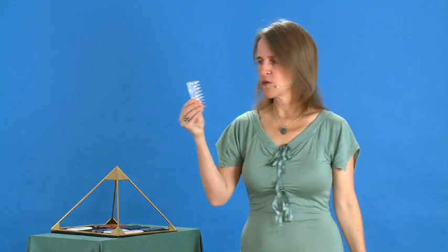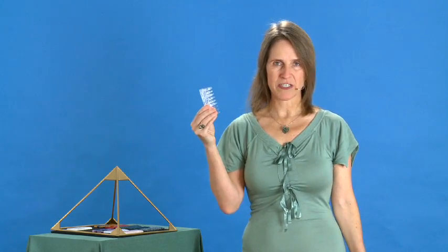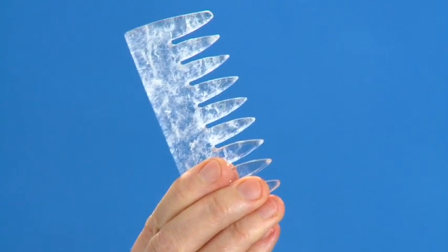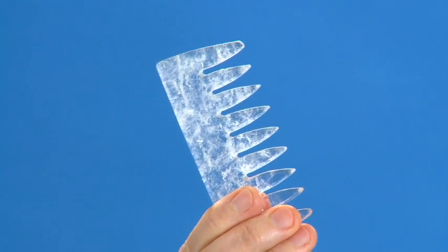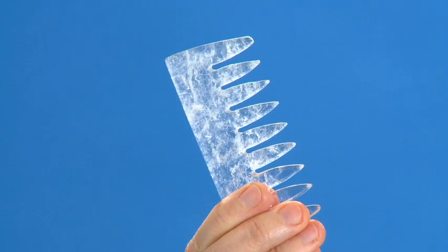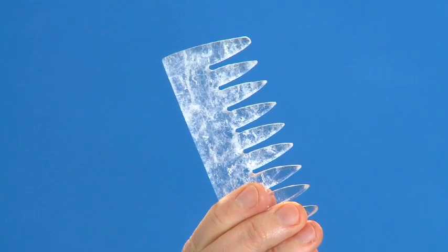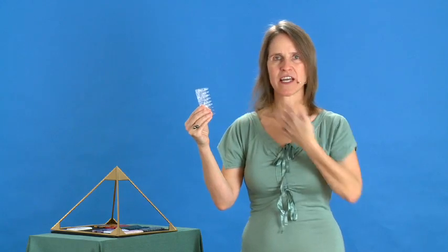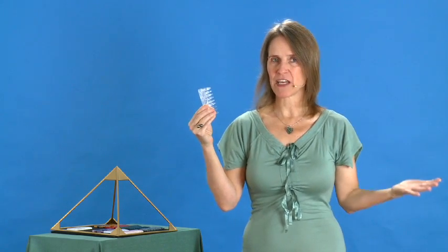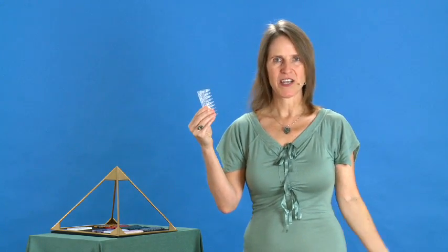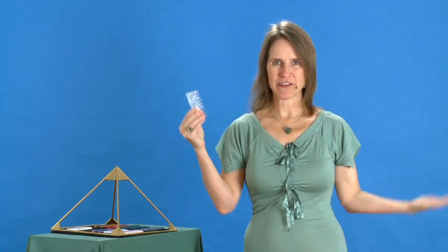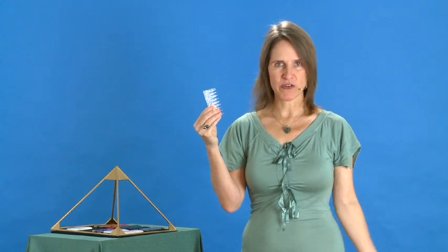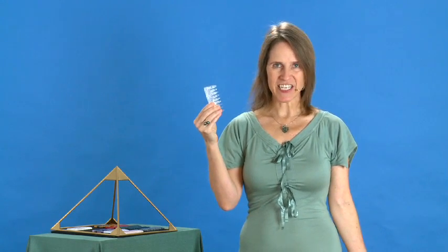The fourth comb is the quartz crystal. Quartz crystal is the master healer among all stones because it carries all the colors of the rainbow within. And some of these gem combs indeed have little rainbows inside. It lets all the light come through and is my favorite comb to purify my aura or to clear the space. The quartz crystal comb carries the master energy of light and clarity.